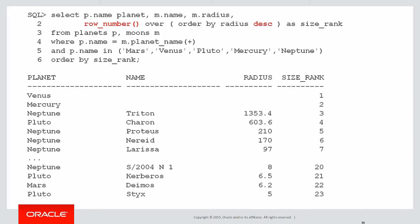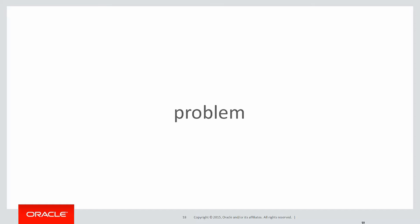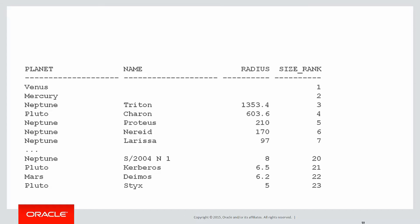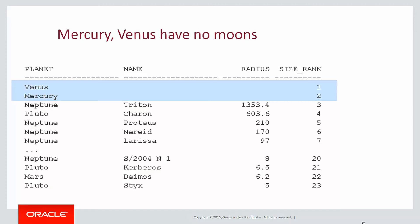Here's our result. As we can see, we have our size ranked down the right-hand side. But discerning viewers will have noticed a problem: if we focus on the result set, we can see that the top two ranked moons actually aren't present at all. Venus and Mercury have been ranked one and two. The reason they're there is because they have no moons, and the outer join has brought them out with a moon of null — and nulls are ranked first in analytics.